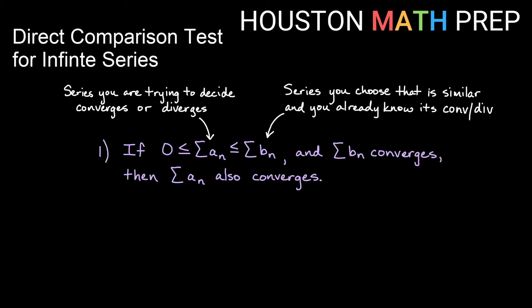To sum up what we have from those examples: if the series we are trying to decide converges or diverges is less than or equal to the series we're comparing to, and that one converges, then it's definitely a real number. If the comparison series is summing to some real number, then our series is summing to some real number as well because it's less than that — so that one will also converge.